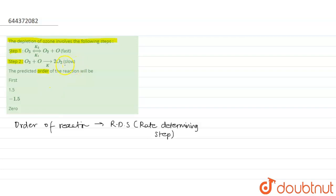Okay, so this is the slow step. The slow step is the rate determining step. So that's why our rate equation will be rate equals to k into the reactant concentration.